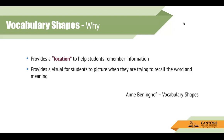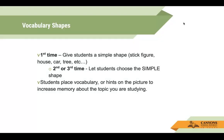In the activity vocabulary shapes, students are given several vocabulary words and a simple shape to draw. Once the shape is drawn, students label the shape with the vocabulary words where it makes sense to them. The important part of this activity comes with the explanation — students have to explain why they put the word where they did. Once complete, they now have a location to associate with the vocabulary or concept. The first time you do this activity, give the students a shape: a stick figure, a house, a car, a tree, whatever. The second or third time, let them choose the simple shape. Students then place vocabulary or hints on the picture to increase memory about the topic.